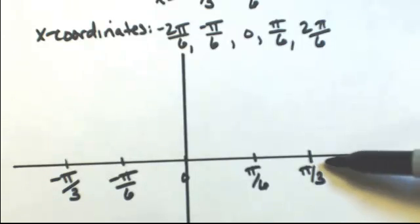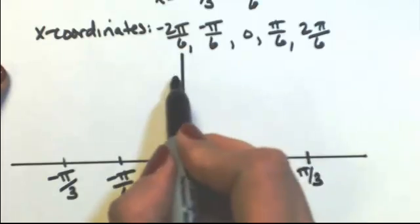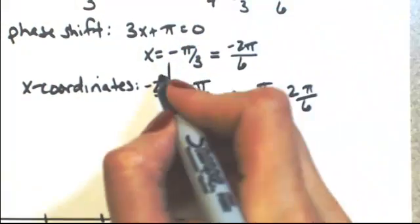Pi is about 3.14, so pi over 3 is about 1. So there's 1. So I need to go a little higher than that. So there's 2.